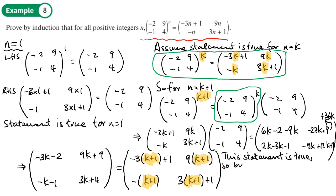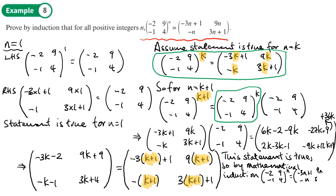Therefore by mathematical induction, [-2, 9; -1, 4] to the n equals the given matrix expression, and that statement is true for n being any positive integer.